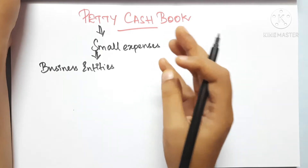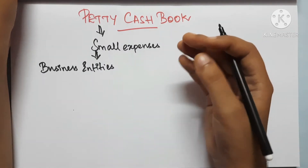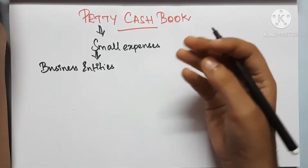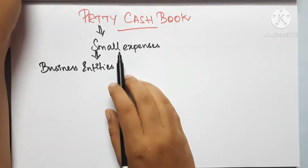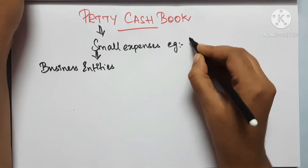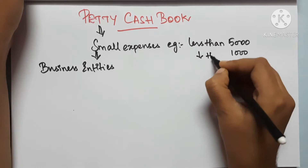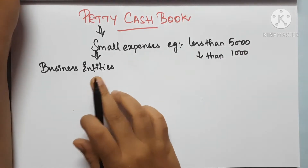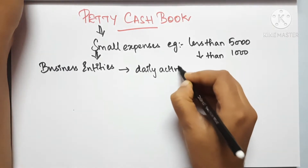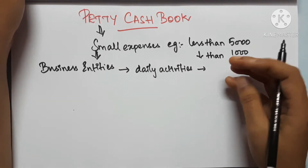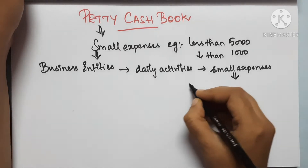In a business, there are small amount transactions and large amount transactions. For example, if you have 5,000 for small expenses, that is a large amount threshold. A business entity's capacity for small expenses versus large expenses may differ. So small expenses are generally less than 1,000. Now small expenses for a business entity - we have daily expenses.